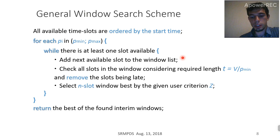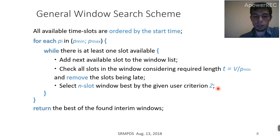In this loop, we go through this list from the first slot to the last one, and at each step we maintain a window list — a list of slots which are simultaneously available to execute our job. This list may contain more than N slots, which is required. So at each step we select N window slots which are best by the user criterion Z. Like a linear search algorithm, at the end of the list, the best interim N-slot window will be the best for the whole scheduling interval, and we return it as a solution.